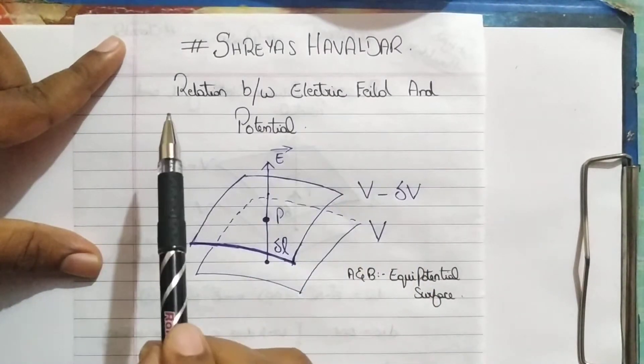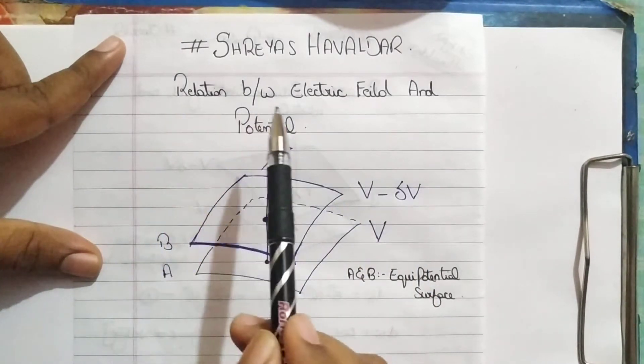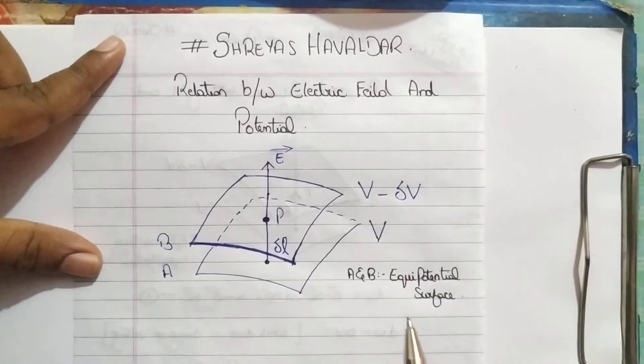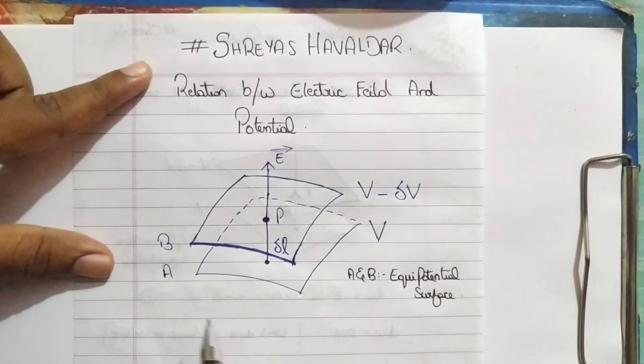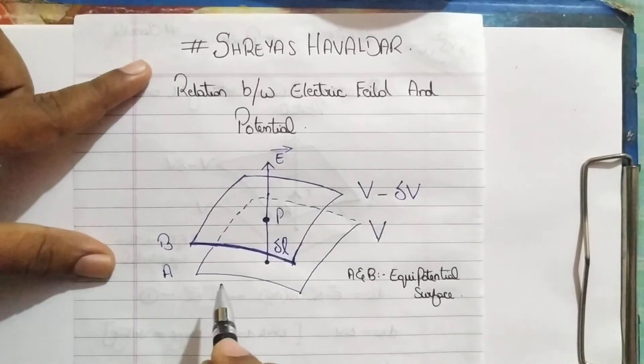I am considering two electrostatic surfaces which are equipotential surfaces. As you all guys know, here A and B are equipotential surfaces. Equipotential surface is nothing but a surface which has same potential on all the points on it.